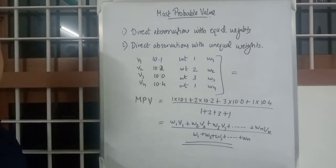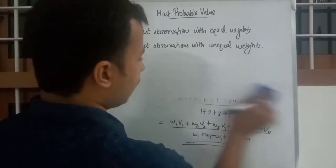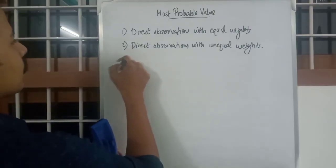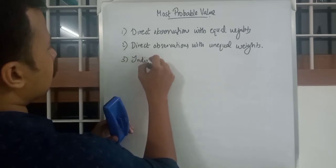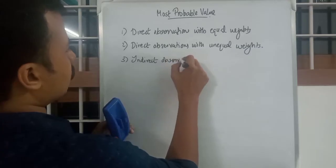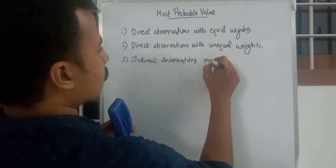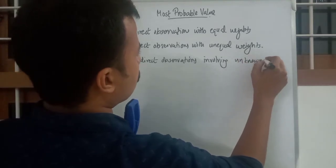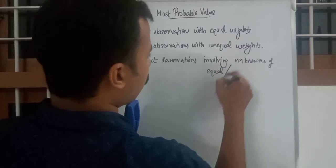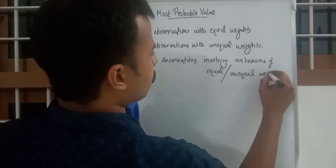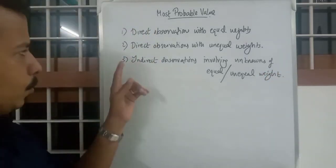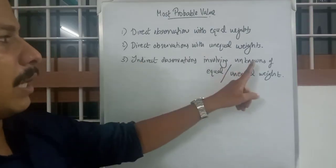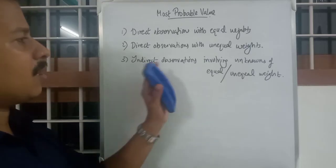That is direct observations with unequal weights. The third case is indirect observations involving unknowns, which can be split into two sub-cases: indirect observations involving unknowns with equal weights, and the fourth case, indirect observations involving unknowns with unequal weights.